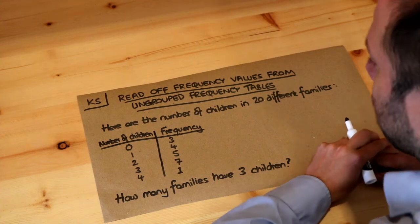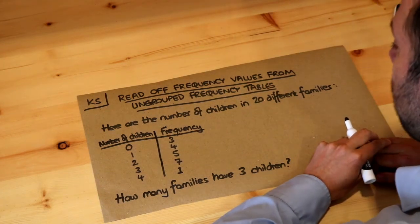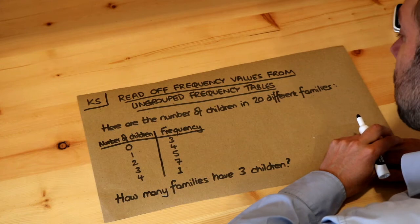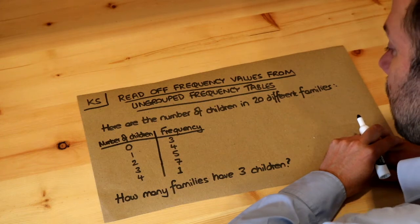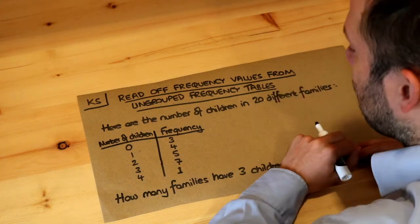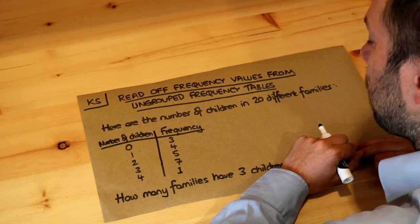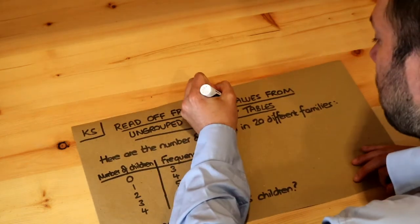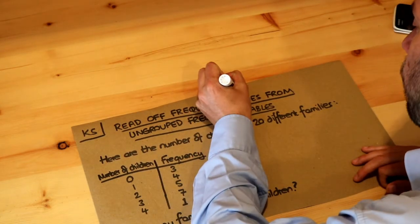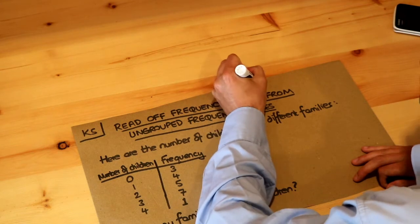Hello and welcome to this Dr Ross Mass key skill video on reading off frequency values from ungrouped frequency tables. In this video we introduce the idea of a frequency table, and what the word frequency means is how often a value occurs.